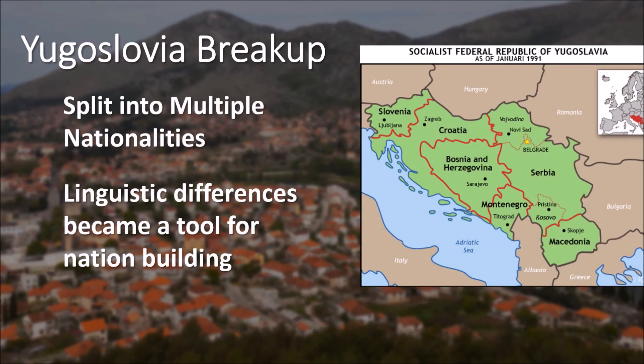Most of us are familiar with the war in Bosnia, Croatia, and Serbia in the 1990s. Linguistic differences became very important — the way you speak could determine who you are and what nation you belong to. All of these Serbo-Croatian and Bosnian varieties were split into multiple national identities, and linguistic differences became a tool for nation building in this area.